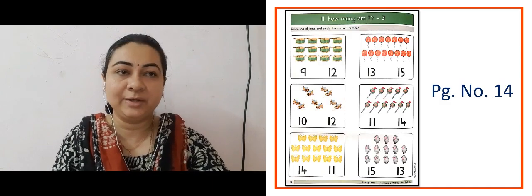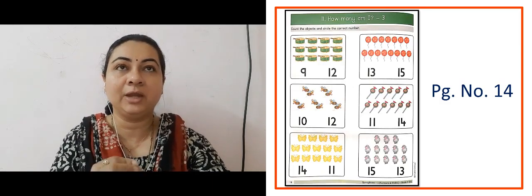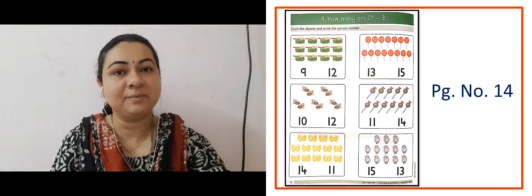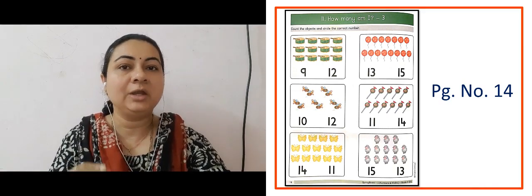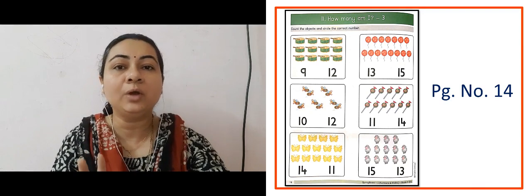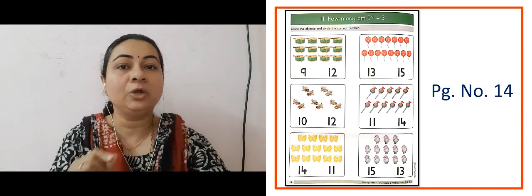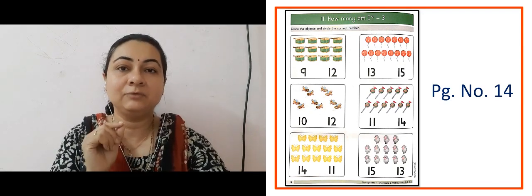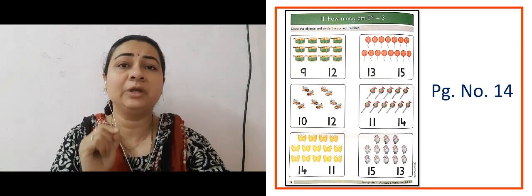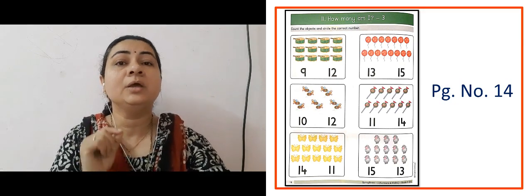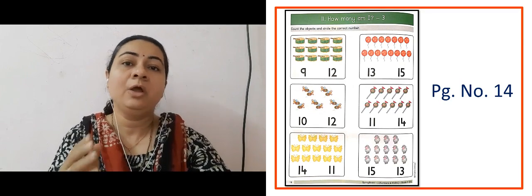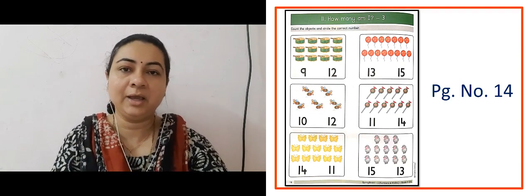The next slide is showing us page number 114, How Many Am I?, that is number 3. In each box some objects are given and two numbers are written. We need to count the number of objects and circle the one which is correct. You can also practice this at home for revision.